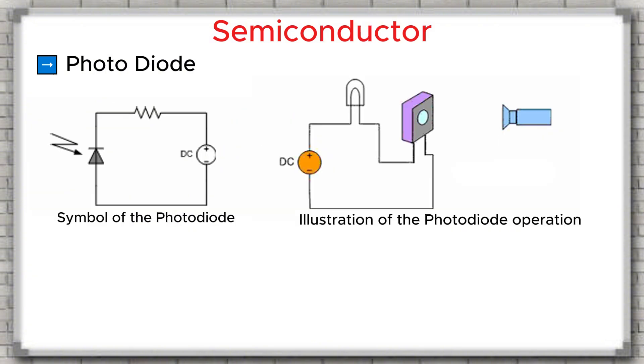Photodiode. The photodiode operates in reverse bias mode. Its case is designed with a small glass window. This window allows light to reach the PN junction. When light shines onto the junction, a reverse current flows through the diode. This reverse current is directly proportional to the intensity of the light. In simple words, the stronger the light, the more the photodiode conducts.